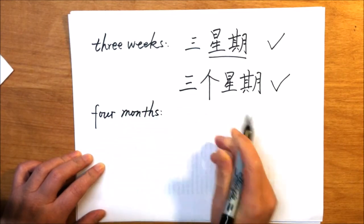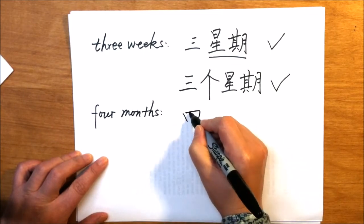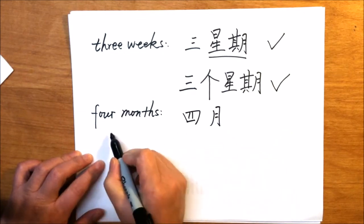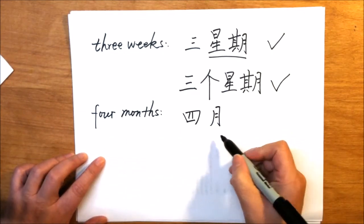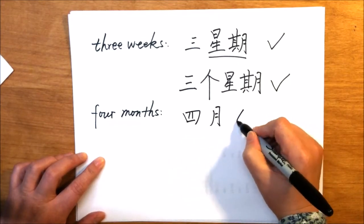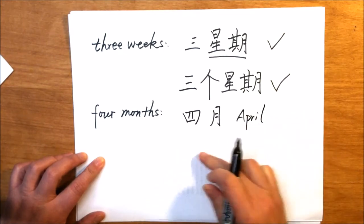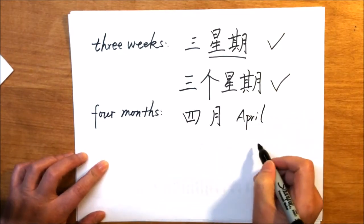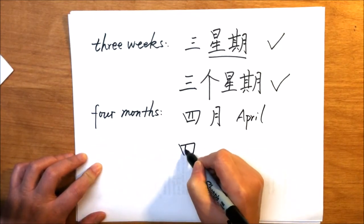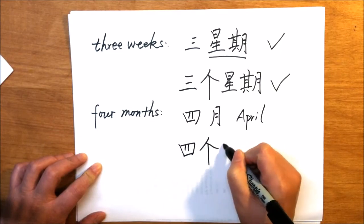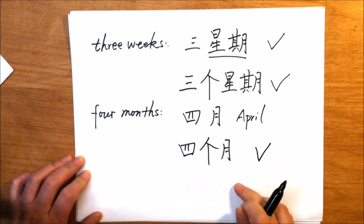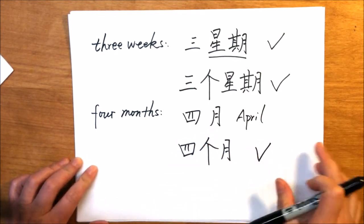Four months, 四月, is that correct? No. In this situation, 四月 doesn't mean four months, 四月 means April. It actually means the fourth month of the year. So if we want to say four months, we have to add the 个: 四个月, that's correct. We cannot say 四月.